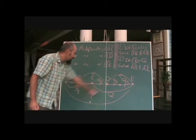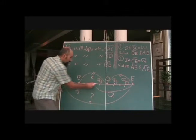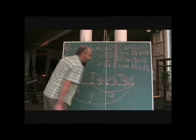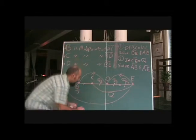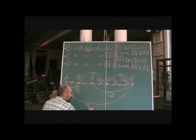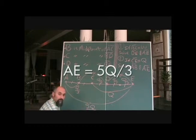Well, what's the length from A to E? Let's take a look at this thing. We have 1, 2, 3, 4, 5 Qs over 3. So this becomes 5 times Q over 3, which is 5Q over 3. So the length from A to E is 5Q over 3.